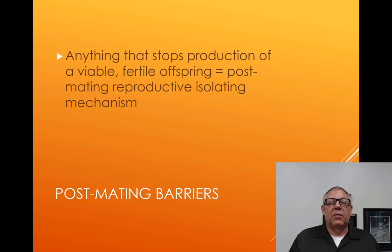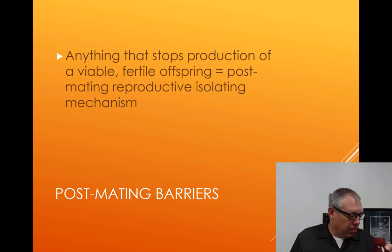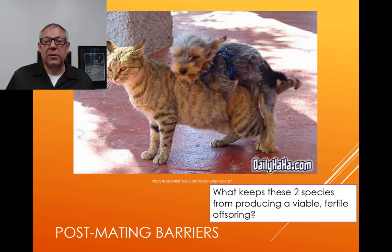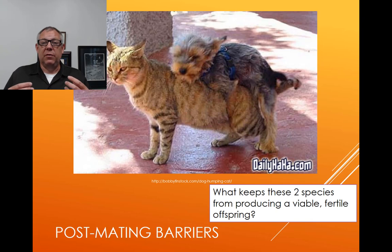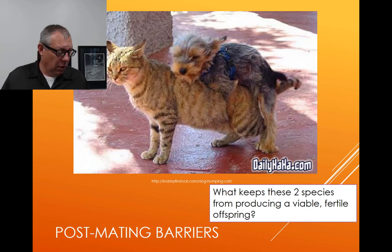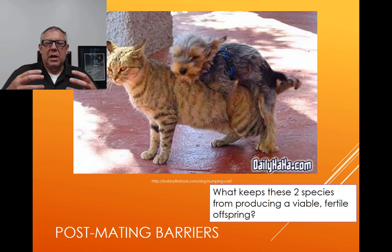Anything that stops production of a viable, fertile offspring after mating is a post-mating isolating mechanism. So here we do have mating, but you still don't get a viable, fertile offspring. What keeps these two species from producing viable, fertile offspring? The gametes don't match up — the sperm and egg probably don't even fuse because they're so incompatible. Although mating takes place, no zygote is formed. The anatomy and/or physiology keeps those gametes from uniting.